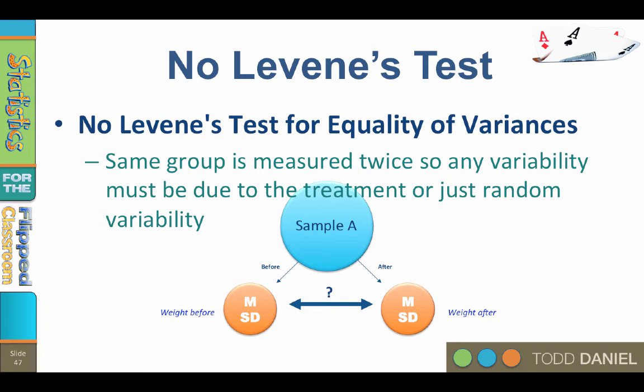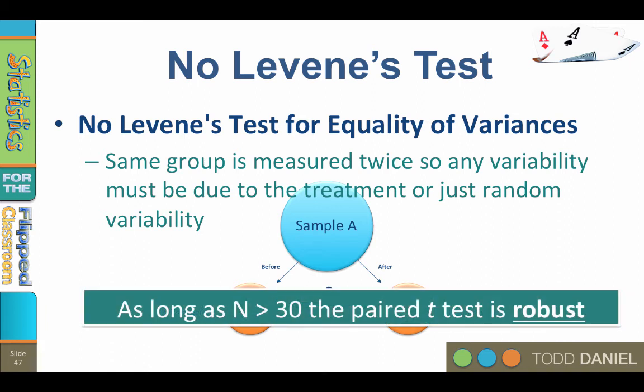The upshot of all of this is that the paired samples t-test is robust, as long as there is a minimum of 30 subjects in the sample group. Robust means that the type 1 error rate does not increase if the assumptions are violated.